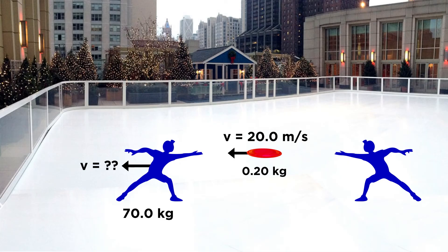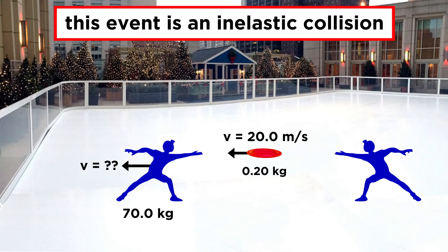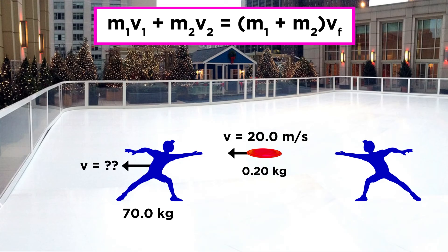As we said, when you catch the frisbee, we can regard this as a collision — and more specifically an inelastic collision, as the frisbee doesn't bounce off of you, but rather you and the frisbee become one object moving together. The equation regarding inelastic collisions tells us that M1·V1 plus M2·V2 equals the quantity (M1 plus M2) times V final.